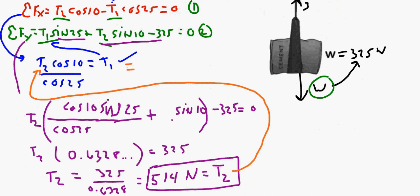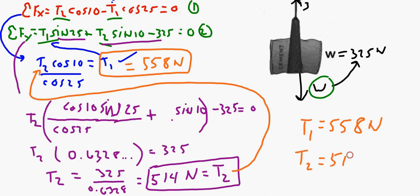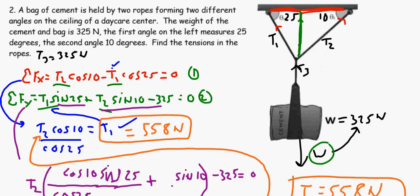And T1 then is equal to 558 Newtons. We have solved for all of our tensions. I'd probably rewrite this down here: T1 equals 558, T2 equals 514, and there's our final answer to that particular problem.